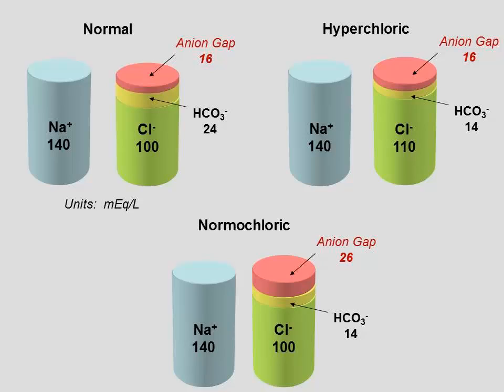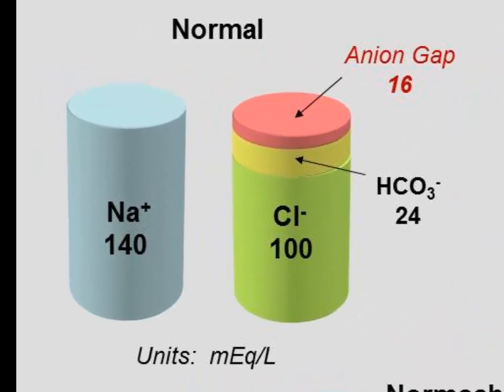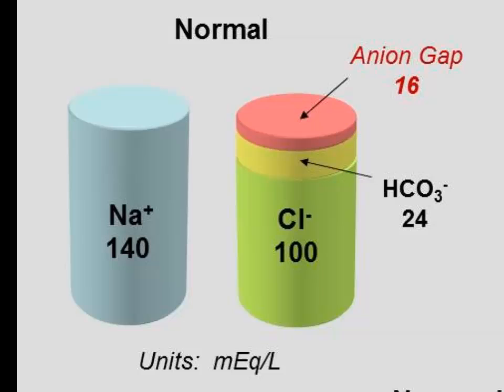Specifically, the way that the anion gap is measured is you take the sodium concentration, which we'll assume to be at some normal range of 140 milliequivalents per liter. We look at sodium because sodium is far and away the most abundant cation in the extracellular fluid. There's a little bit of calcium, there's a little bit of magnesium, but it's really small compared to our extracellular sodium concentration. If we compare that sodium concentration to the concentration of the major anions that are measured, there are really only two. There's one, the most abundant one, is chloride. So chloride has a concentration of around 100 milliequivalents per liter. And then the second most abundant anion that is measured is bicarbonate, which has a typical concentration of around 24 milliequivalents per liter.